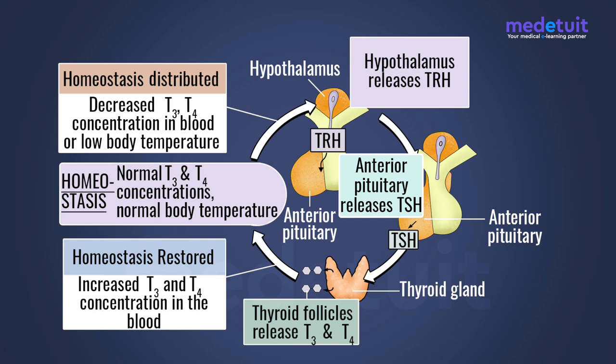Below the pituitary is the thyroid gland in the neck. The hypothalamus secretes an important hormone called thyrotrophin releasing hormone, abbreviated as TRH. This TRH comes through the bloodstream and acts on the anterior pituitary, otherwise called the adenohypophysis. The adenohypophysis, in response to TRH, secretes thyroid stimulating hormone, otherwise called TSH.